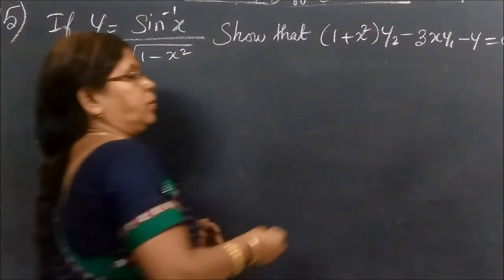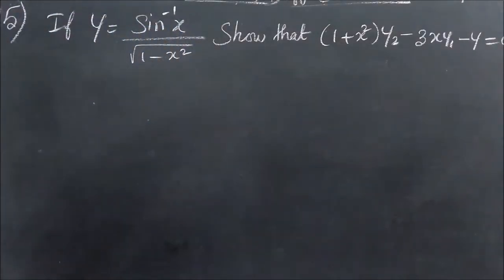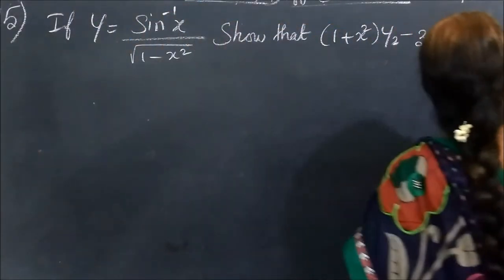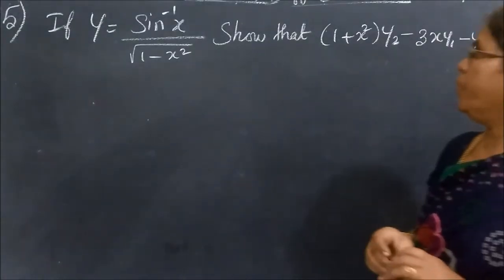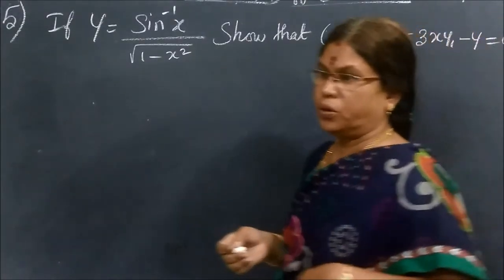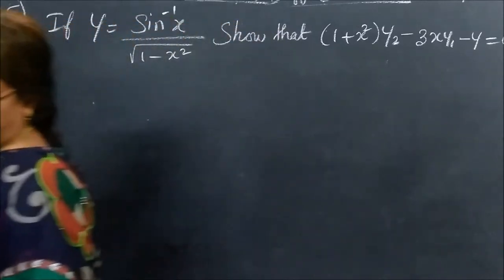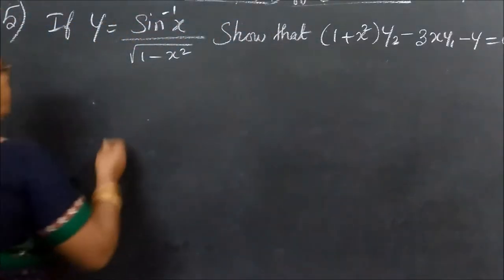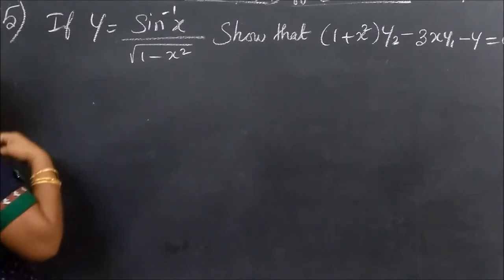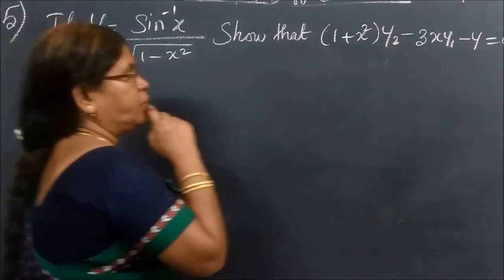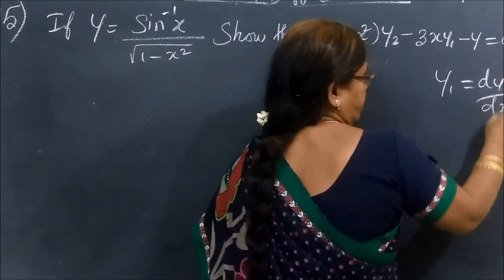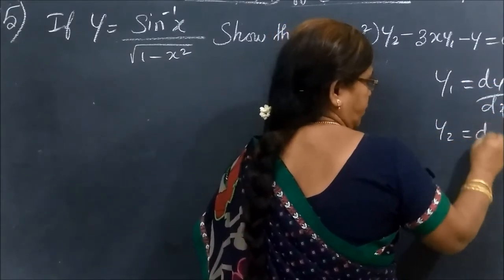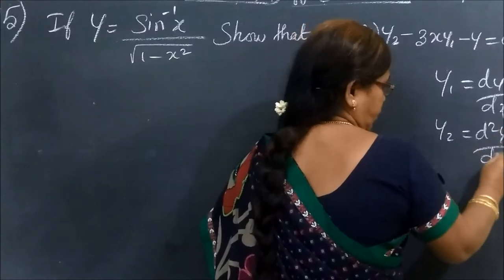Now we see part 284 of 283, and this is the last question in this exercise. Up to 10.4, now we go to 11.1. See the first one. Here you are given Y. We are going to write Y1. Y1 means dY by dX. Y2 means d²Y by dX².